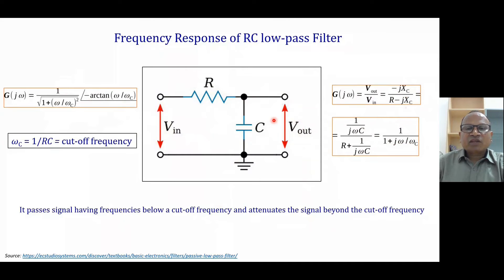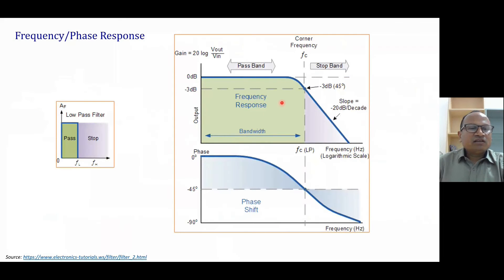Frequency response is nothing but a simple plot between the gain and the frequency. So you see here, this is the ideal response of the low pass filter, where we can see till the cutoff frequency, the signal is passed and after that the signal is not allowed, which is stopped. It means completely eliminated. This is only possible in case of ideal filter.